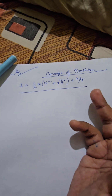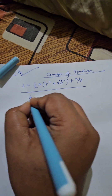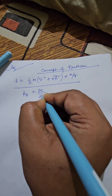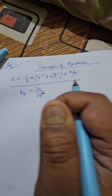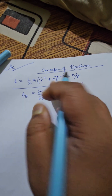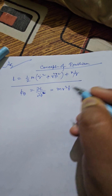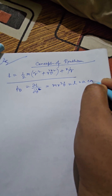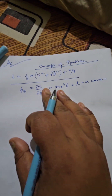Here r and theta are polar coordinates. You can see in this expression of L that theta is not present explicitly, so theta is an ignorable coordinate. The corresponding conjugate momentum is del L / del(theta-dot) = m r squared theta-dot, which we consider as a constant, say small l.